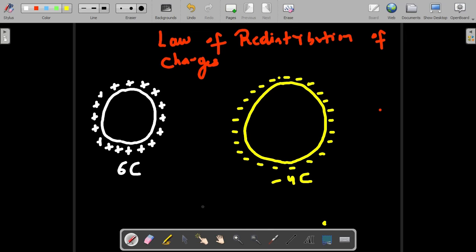Now if you bring these two spheres together, which means if you touch them, this is what will happen. The net charge of the system will be equal to six minus four divided by two, which means